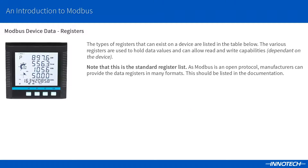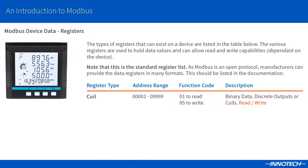We will look at the standard register list used by a majority of Modbus devices which includes four different types. The first type are Coils. Coils start at address 1 and go up to 9999. Function code 1 is used to read back this value and Function code 5 is used to write a value into the register. Coils hold binary values — zeros and ones — think of these as a binary output. Input status registers start at 10001 and go up to 19999. Function code 2 is used to read back data values. Inputs hold binary data and are read only — think of these as binary inputs.